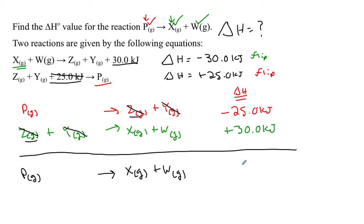I've built up the equation I want so I can solve for the change in enthalpy using Hess's law. I need to sum up all the enthalpy changes. So negative 25.0 kilojoules plus 30.0 kilojoules, and I'm left with a positive 5.0 kilojoules as the change in enthalpy for the equation.